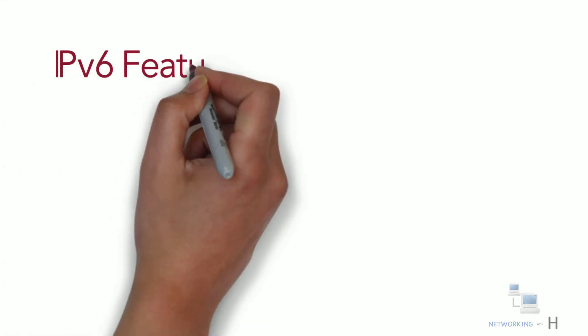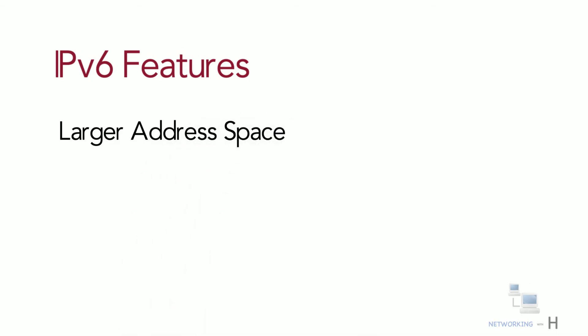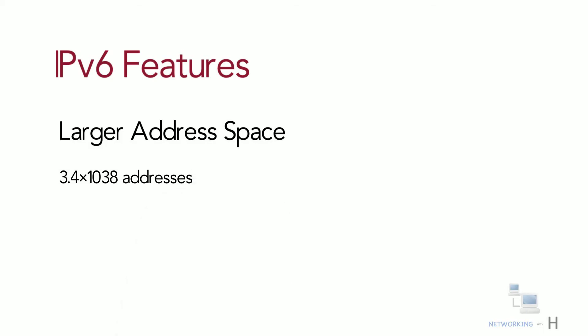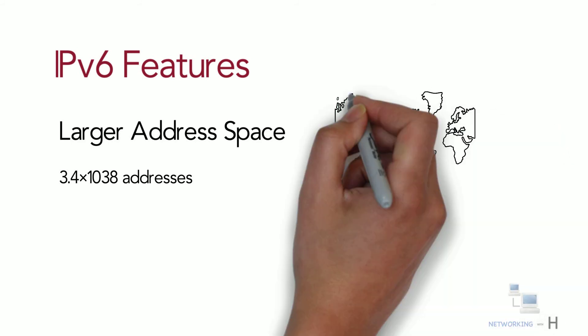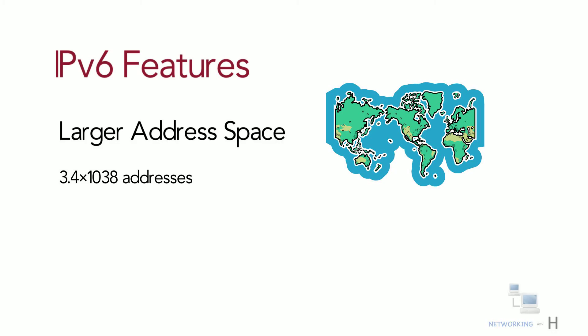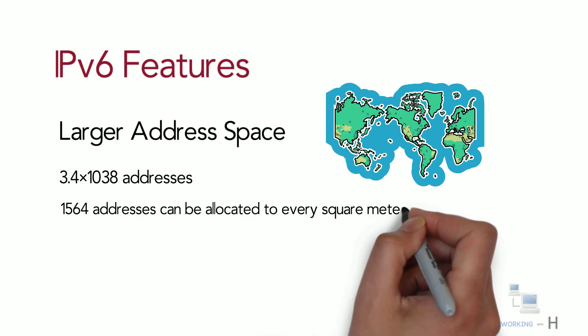Next, let's look at IPv6 features, starting with larger address space. In contrast to IPv4, IPv6 uses four times more bits to address a device on the Internet. This extra bit space provides approximately 3.4 × 10^38 different combinations of addresses, which can accommodate the aggressive addressing requirements of almost everything in the world. According to an estimate, 1,564 addresses can be allocated to every square meter of the Earth.